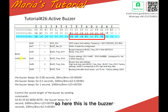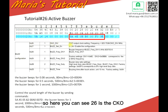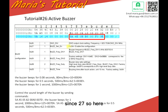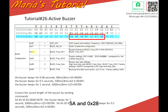Here is the builder configuration as in the CFG. Here you can see 26 is the CKO output. Since 27 is quite important: builder 5A means enable the configuration — 5A.